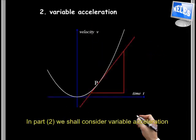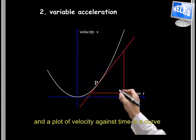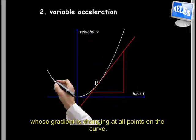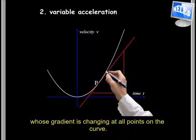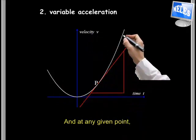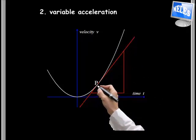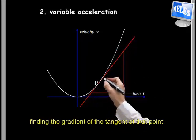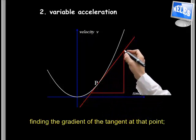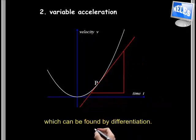In part 2, we shall consider variable acceleration. The plot of velocity against time is a curve whose gradient is changing at all points on the curve. At any given point, the acceleration at that point is given by finding the gradient of the tangent at that point, which can be found by differentiation.